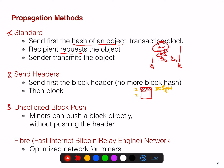Then there's the unsolicited block push. If A is a miner and he just found a block, he will naturally forward this block to B. He doesn't need to send an INV message and then wait for B to send a GET message, because he literally created this block — he's the first peer aware of it. So he will just send the whole block, getting rid of those first two messages.